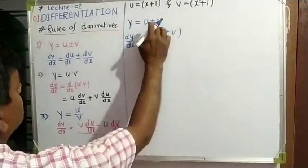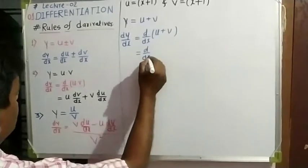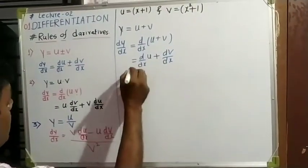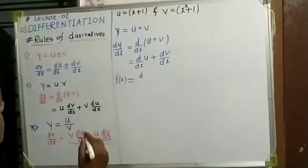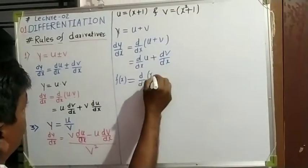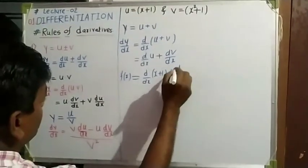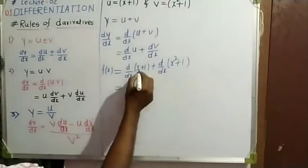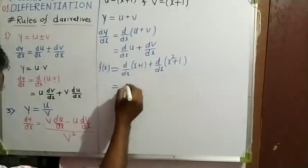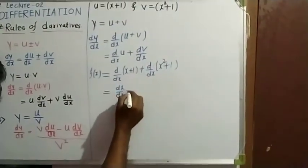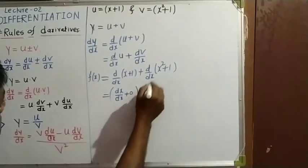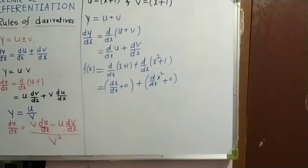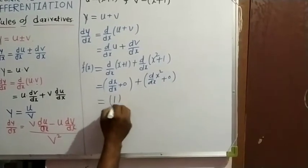We have separated the second function. Similarly, we can represent f dash of x, that is du/dx, which is x plus 1, plus the derivative of v with respect to x, that is x squared plus 1. The derivative of x, and the derivative of the constant is zero. The derivative of x squared is 2x. Therefore, the derivative of the two functions gives the result.